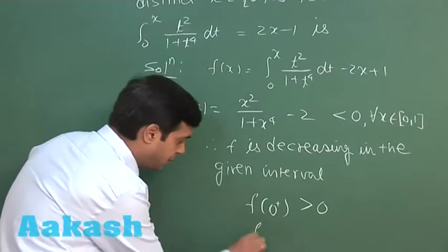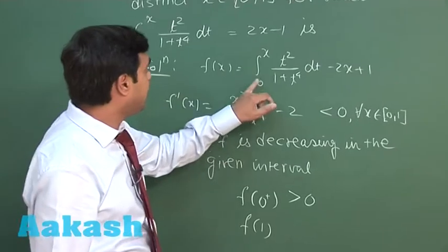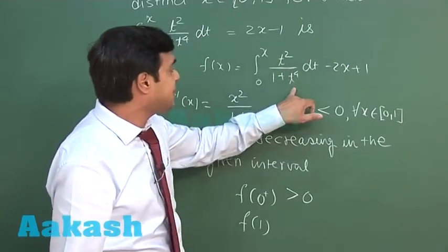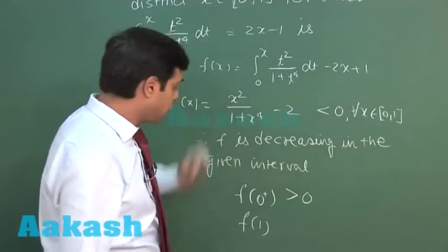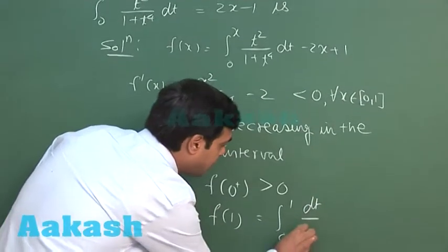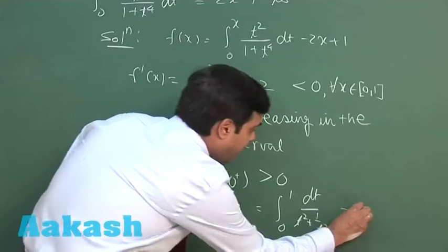f of 1, when we are approaching towards 1, we can see here it is integral 0 to 1 of t square upon 1 plus t to the 4 dt. I can also read it as integral 0 to 1 of dt upon t square plus 1 by t square minus 1.